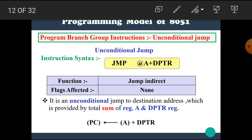The next instruction is JMP @A+DPTR — that is, jump at the rate A plus DPTR. This uses indexed addressing mode, where the index is formed by the addition of the accumulator with the DPTR register. It is an unconditional jump to the destination address provided by the sum of register A and DPTR.